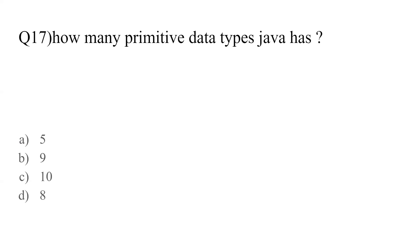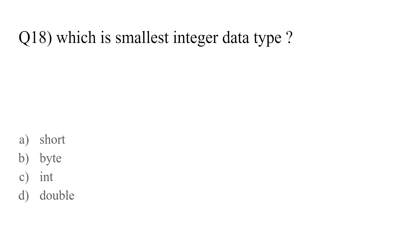Question number seventeen: how many primitive data types does Java have? We discussed this in the first MCQ — Java has eight primitive data types: char, byte, short, long, int, float, double and boolean. Question number eighteen: which is the smallest integer data type — short, byte, int, or double? Do not go with the name — short is not the one. The answer is byte. Byte is the smallest integer data type in Java.